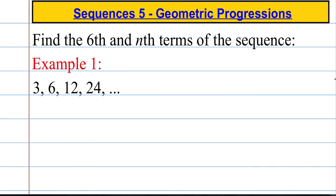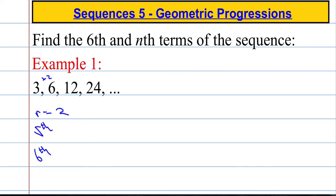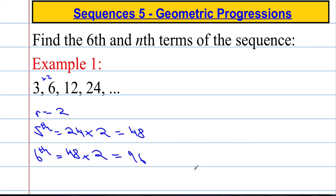Let's have a look at it in practice. I need to find the sixth and nth terms of this sequence. To find the sixth term, we already have the first four, so we can extend it. The common ratio r equals 2. The fifth term is 48, found by doing 24 multiplied by 2. Then the sixth term is 48 multiplied by 2, which gives us 96. So the sixth term is 96.